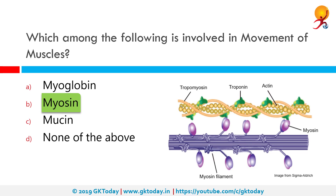Muscle contraction is a result of an interaction between the actin and myosin filaments that generate their movement relative to one another. The molecular basis for this interaction is the binding of myosin to actin filaments, allowing myosin to function as a motor that drives filament sliding.